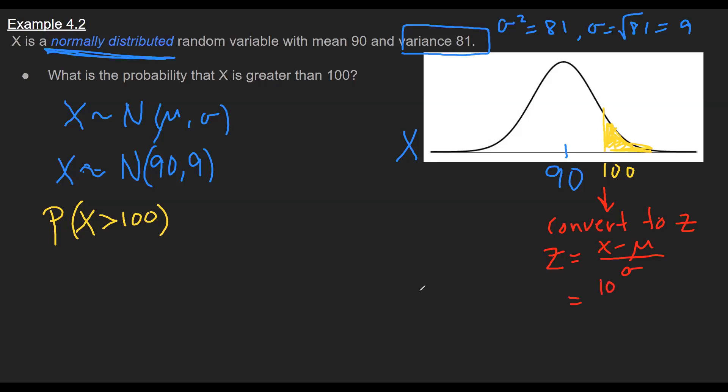So if I plug in the values for this example, the X value I'm trying to standardize is 100. The mean we are given is 90, and the standard deviation we figured out earlier is 9. So running through the arithmetic, I get 1.11.